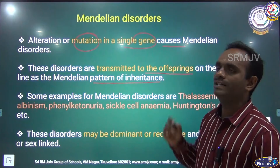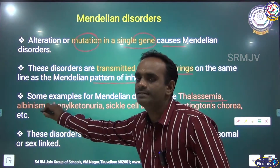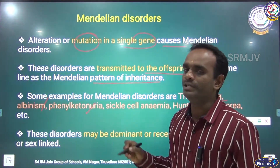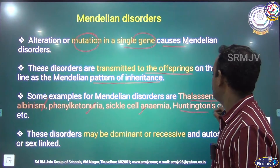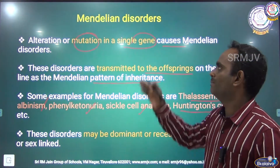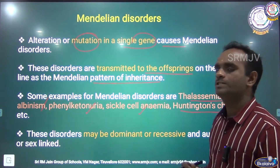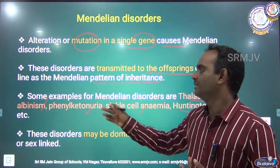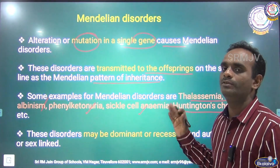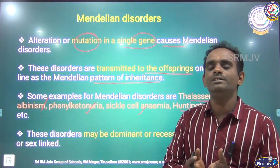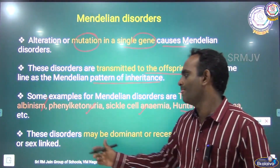Some examples of Mendelian disorders are: first, thalassemia; second, albinism; third, phenylketonuria; fourth, sickle cell anemia; and last, Huntington's Chorea. These disorders may be dominant or recessive, and autosomal or sex-linked.